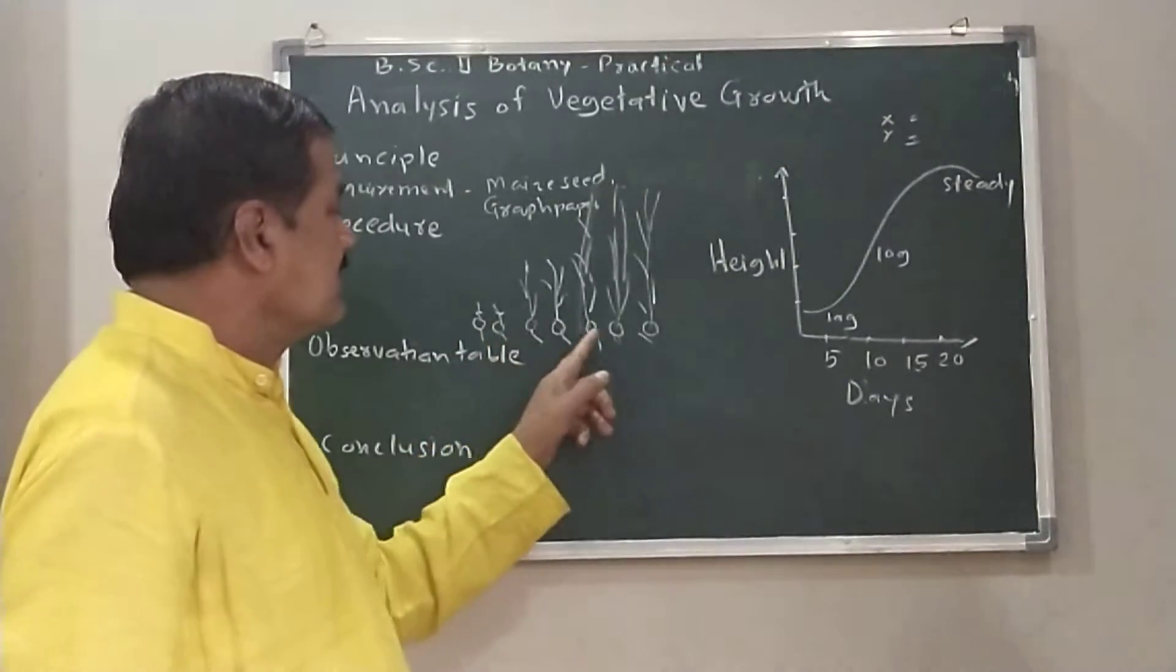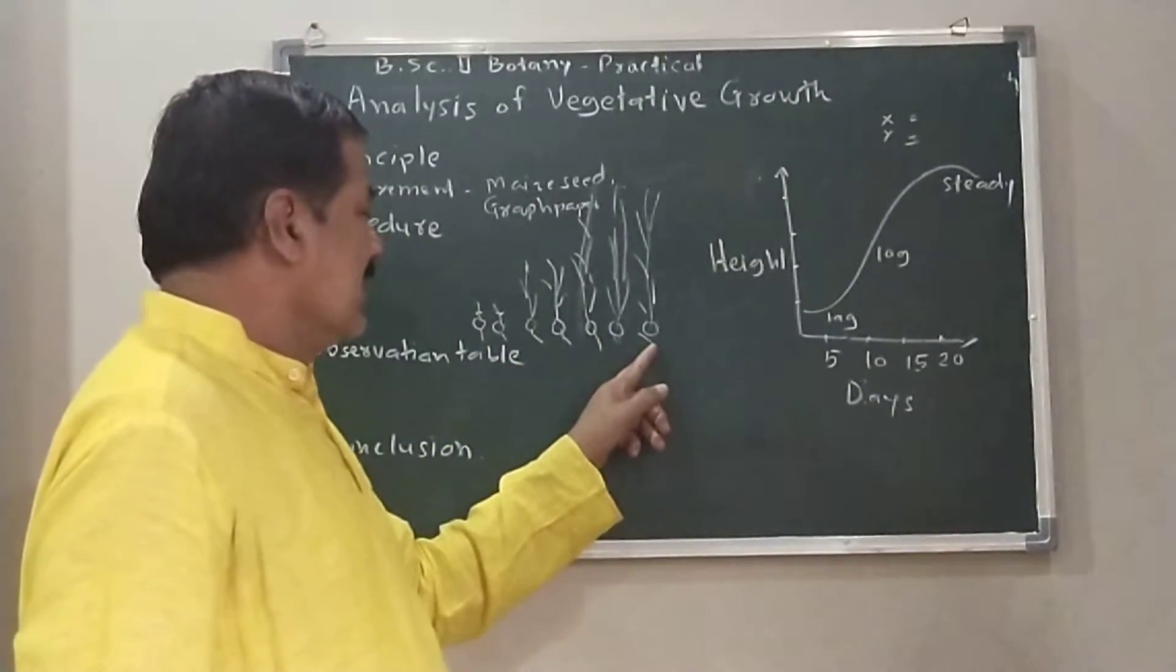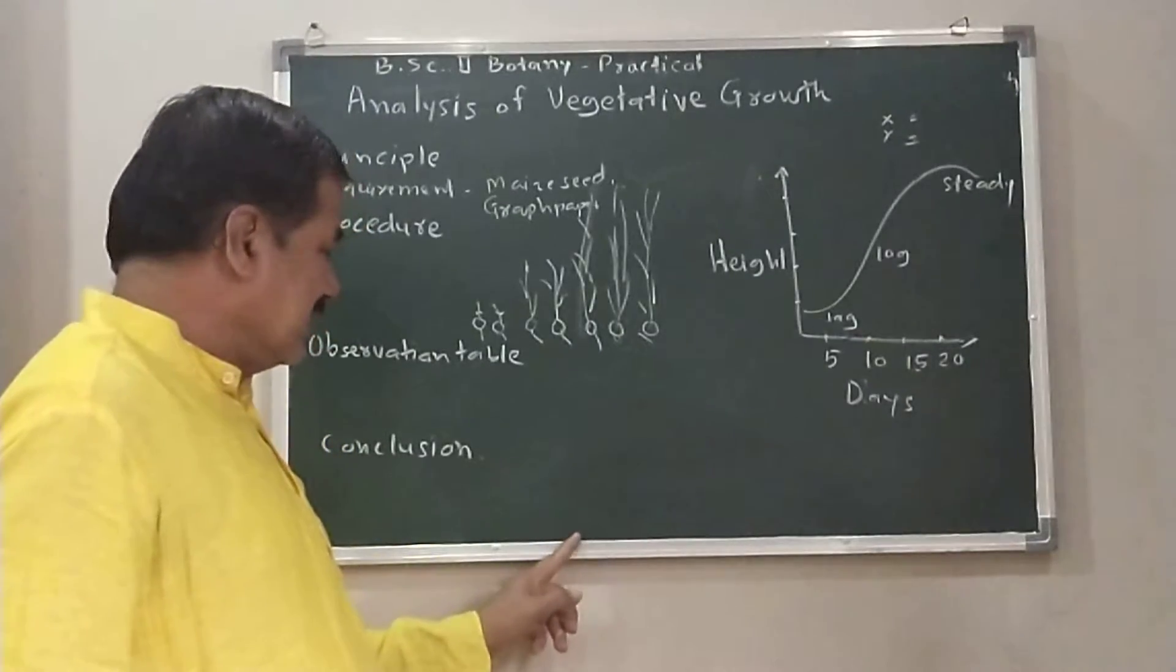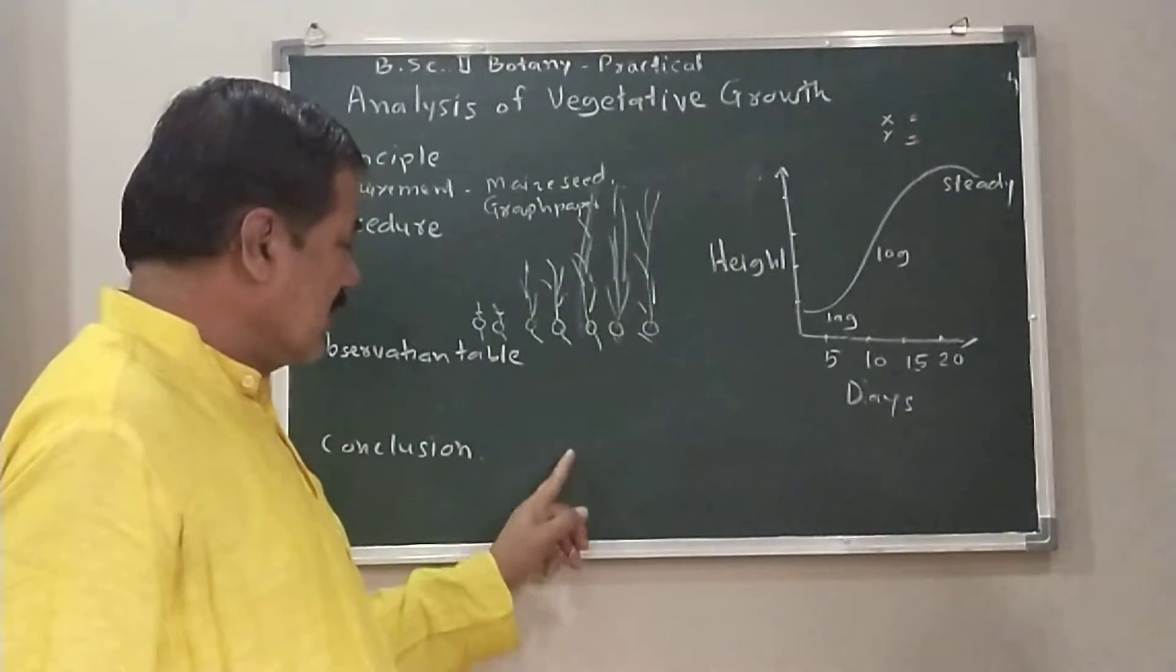There are seven seeds, seven seedlings. Therefore, the observation table considers the seven seedlings, one to seven.